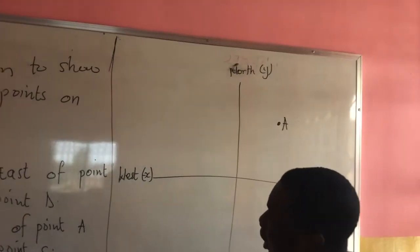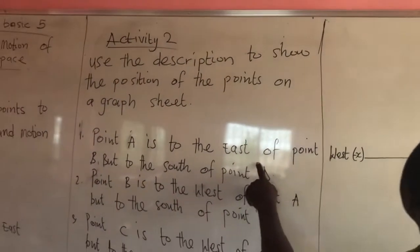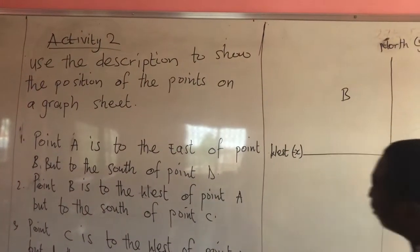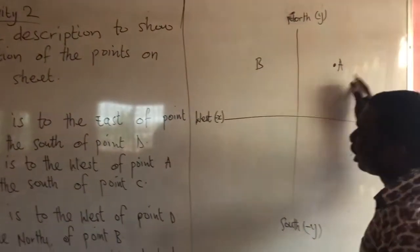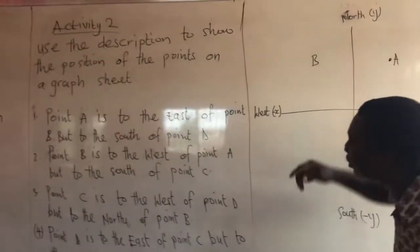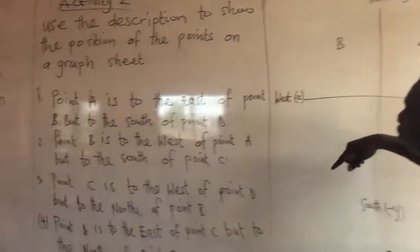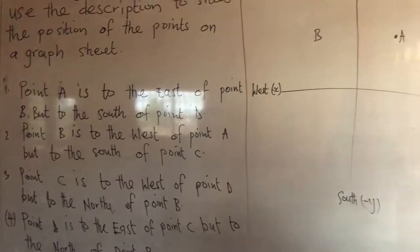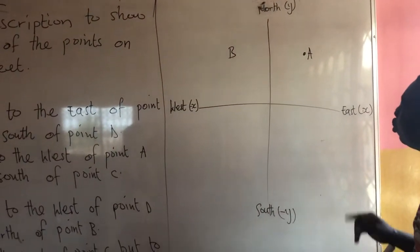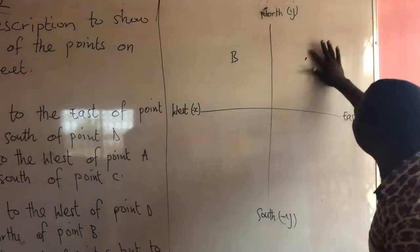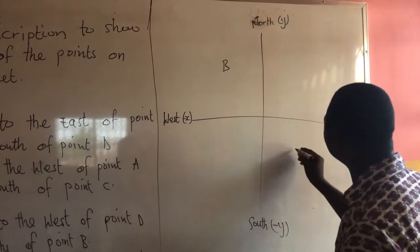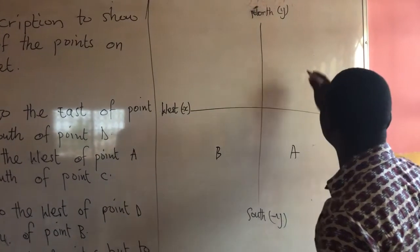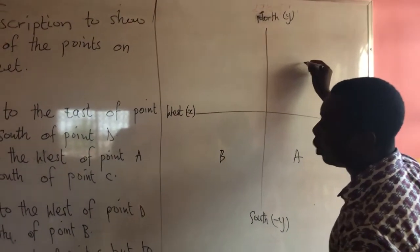Point A is to the east, so this is the east. I will bring B here, because it is to the east. And to the south of point D — to the south of point D. So, we have to bring A down here and bring B down here. A is to the south, so this is our D.